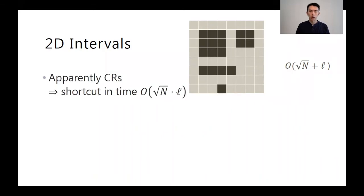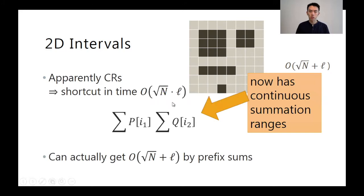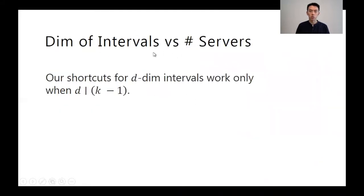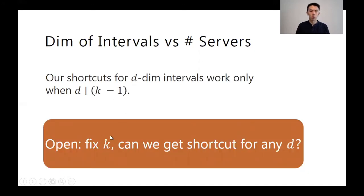We can generalize this to a union of disjoint combinatorial rectangles, because each part is additive and the disjoint rectangles won't interfere when added together. This basic observation gives rise to all of our shortcuts for Reed-Muller PIR. 2D intervals are combinatorial rectangles, so there are shortcuts that run in square-root-N times L time. We can further improve this by exploiting continuous ranges — first taking prefix sums over the vector variables, then answering each summation in constant time. One-dimensional intervals are mapped to at most three 2D intervals, so a strong shortcut for intervals automatically gives a strong shortcut for segments. When generalizing to more servers, our shortcuts work for high-dimensional intervals only when the dimension divides the number of servers minus one — an interesting open problem.